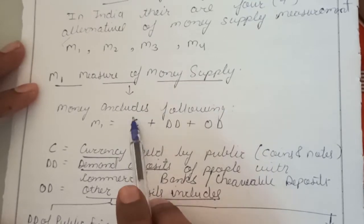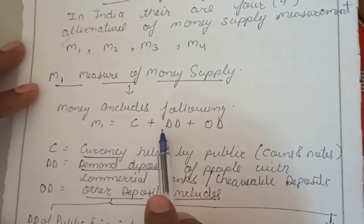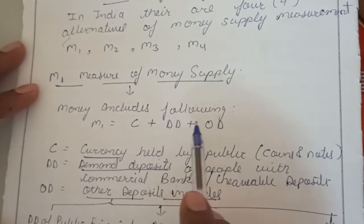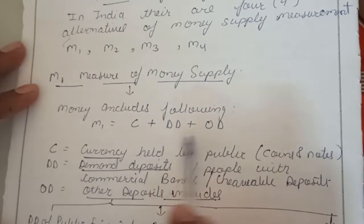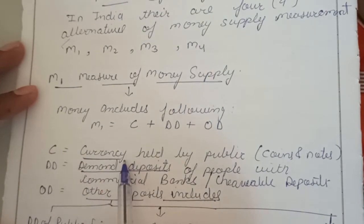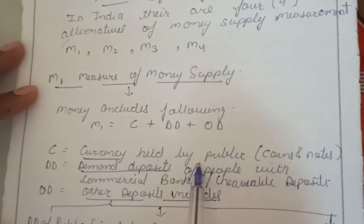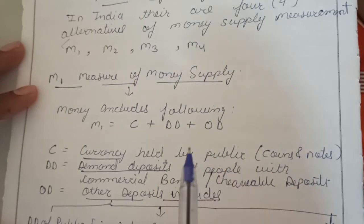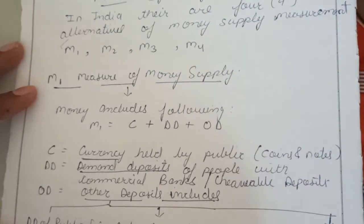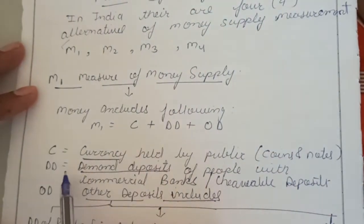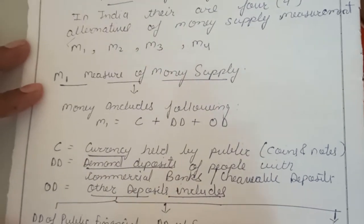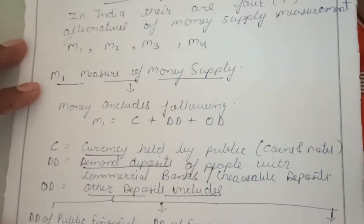M1 includes C plus DD plus OD. So what is C, what is DD, and what is OD? C means currency held by the public, which can be in the form of coins or notes — coins or notes held by the public. Then DD means demand deposits of people with commercial banks.